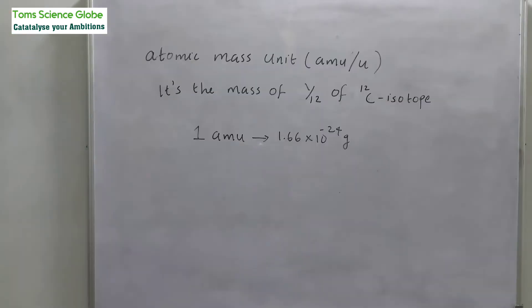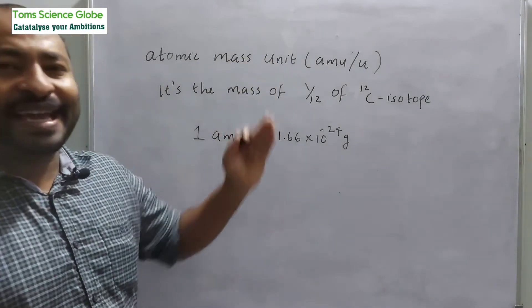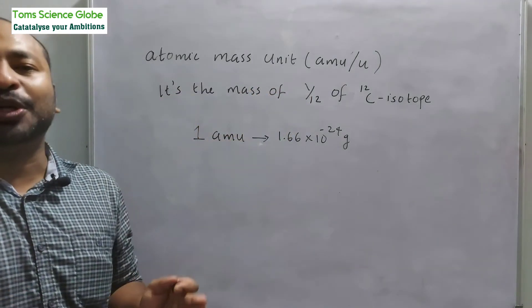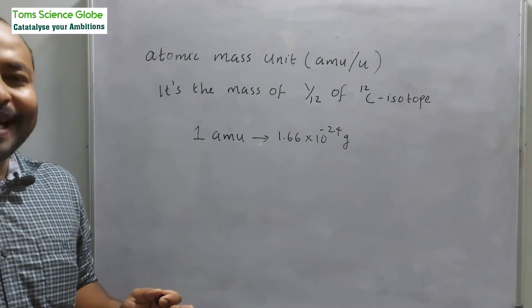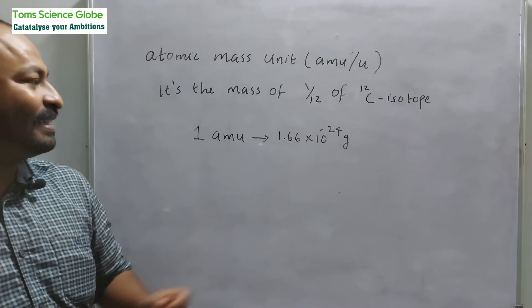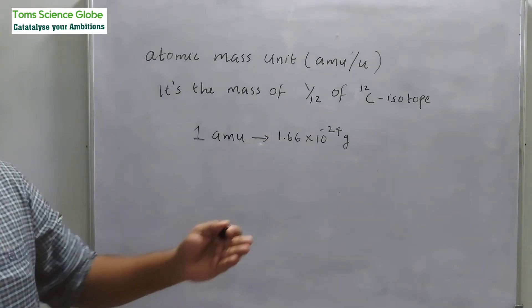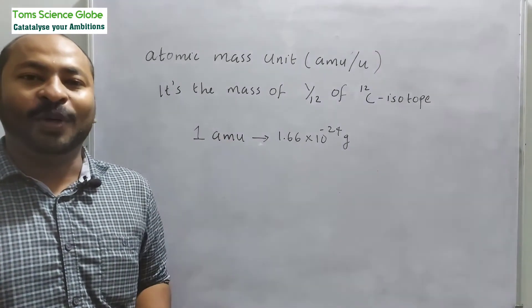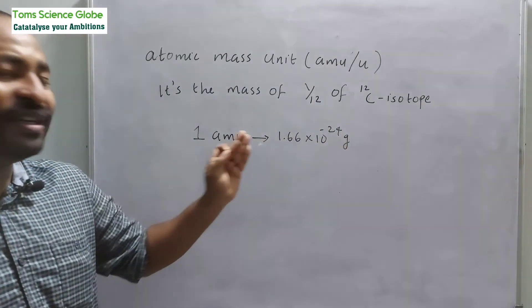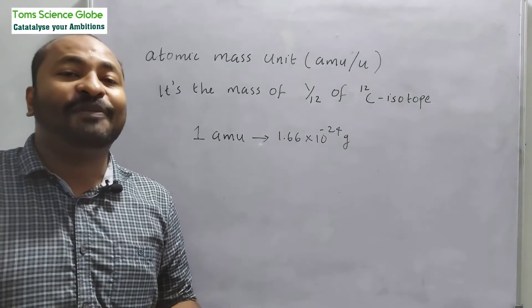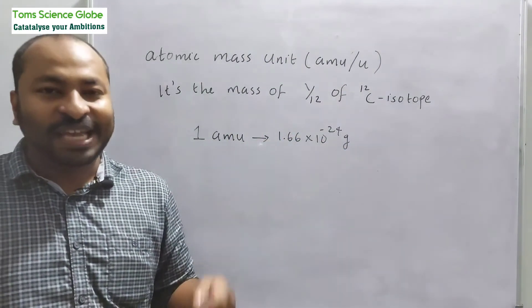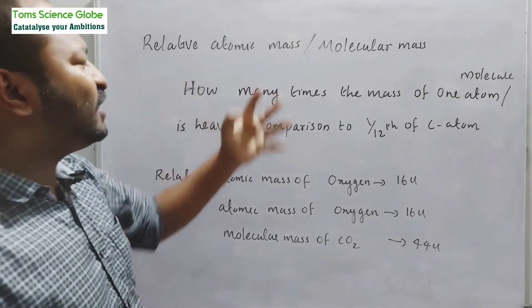So 1 atomic mass unit equals 1.66 × 10⁻²⁴ grams. What we have done is taken the carbon mass and divided it by 12 units. That is why we have 1.66 × 10⁻²⁴ grams. Now let's talk about relative atomic mass or molecular mass.